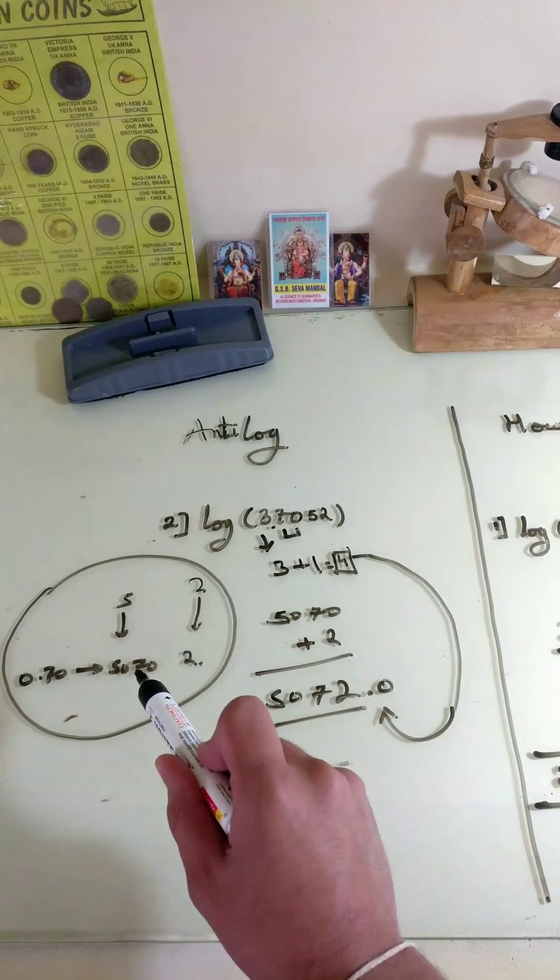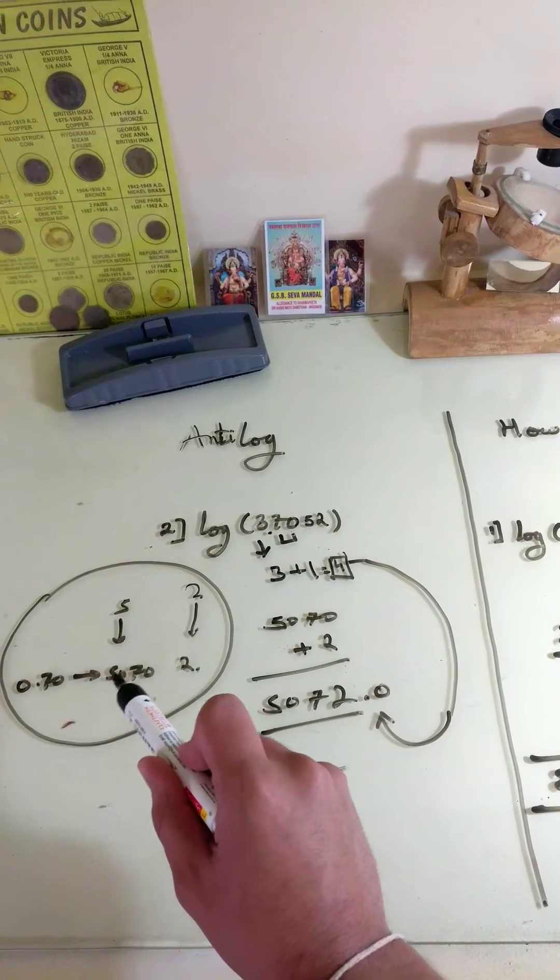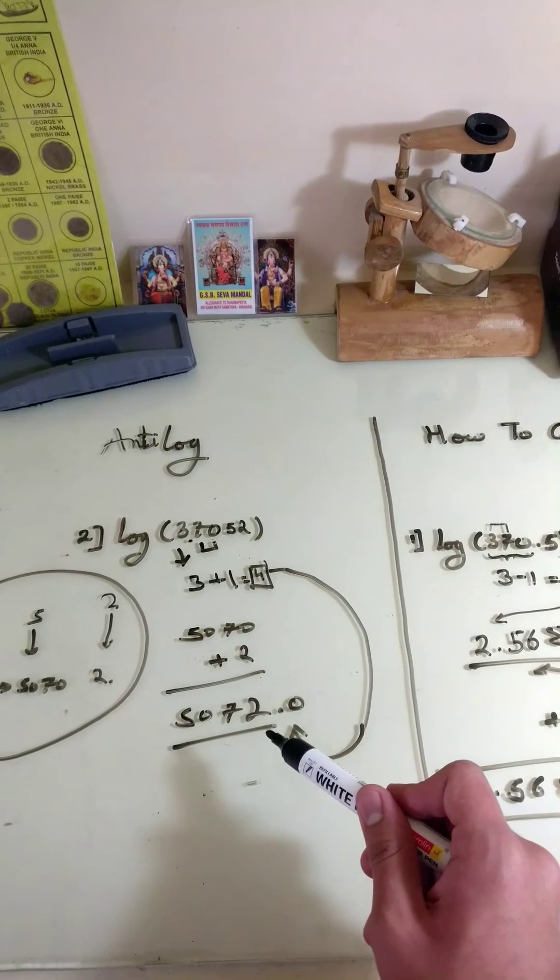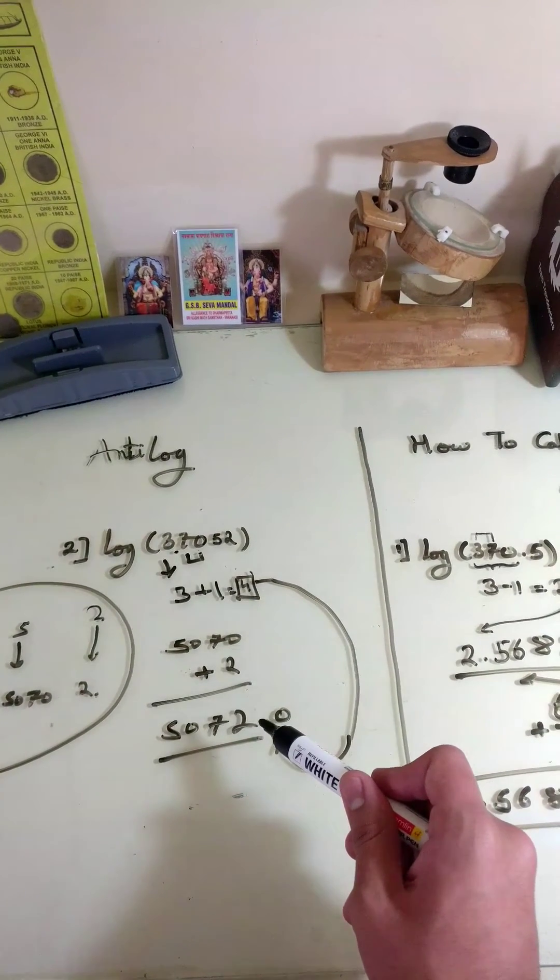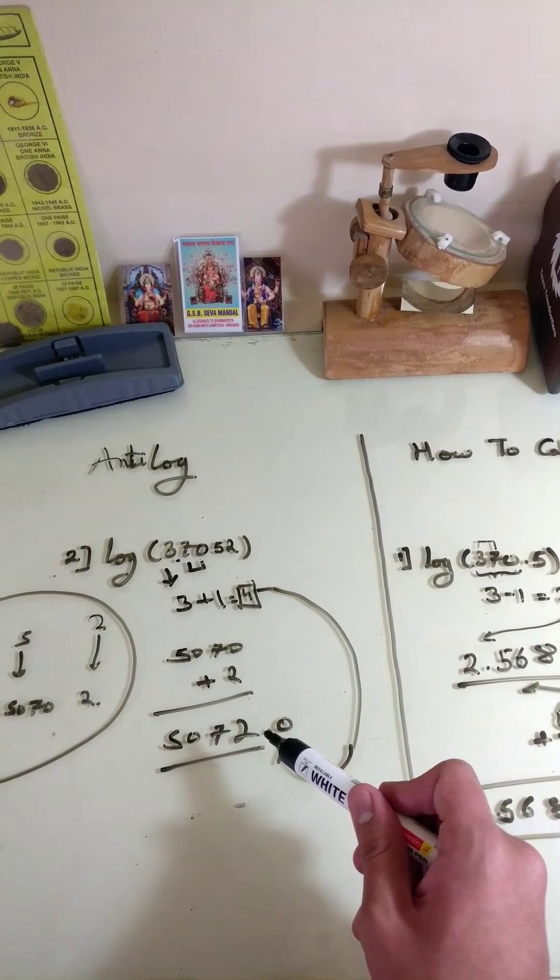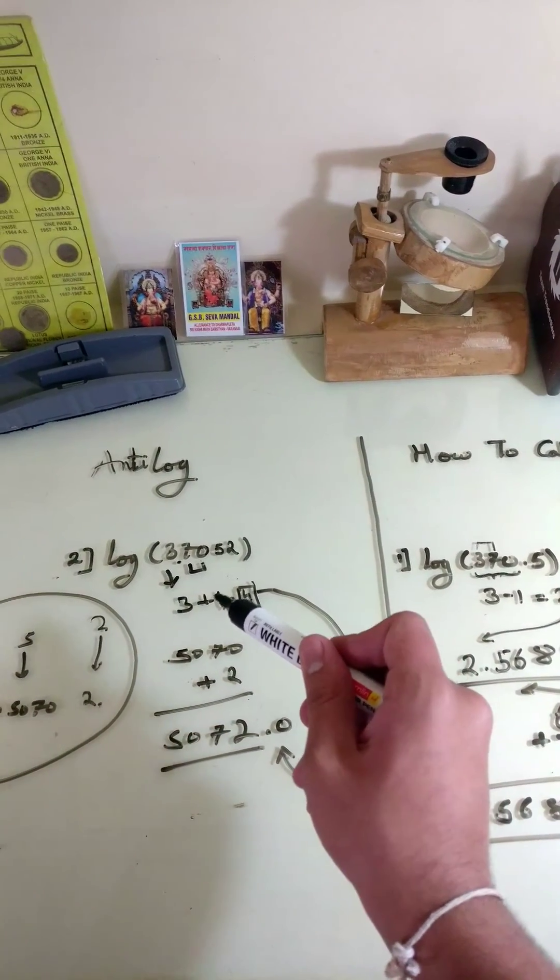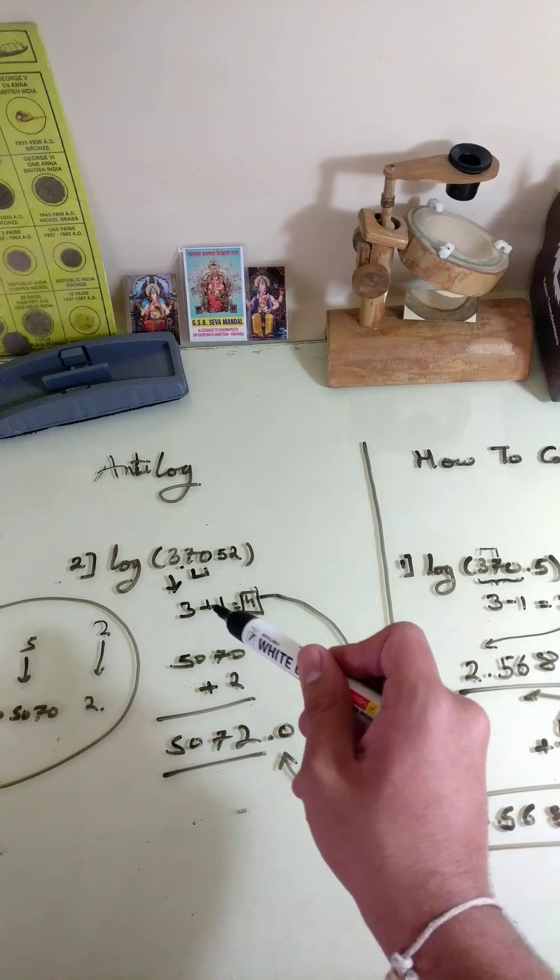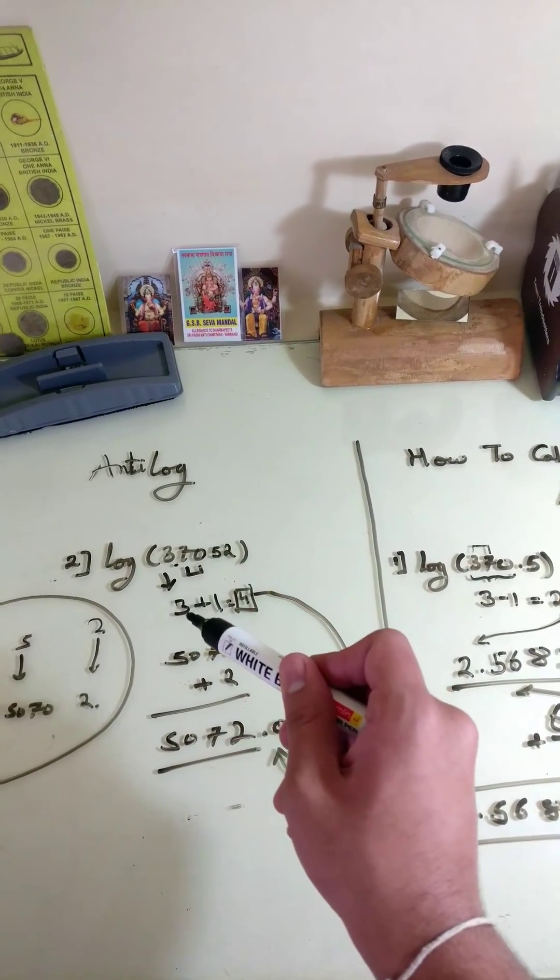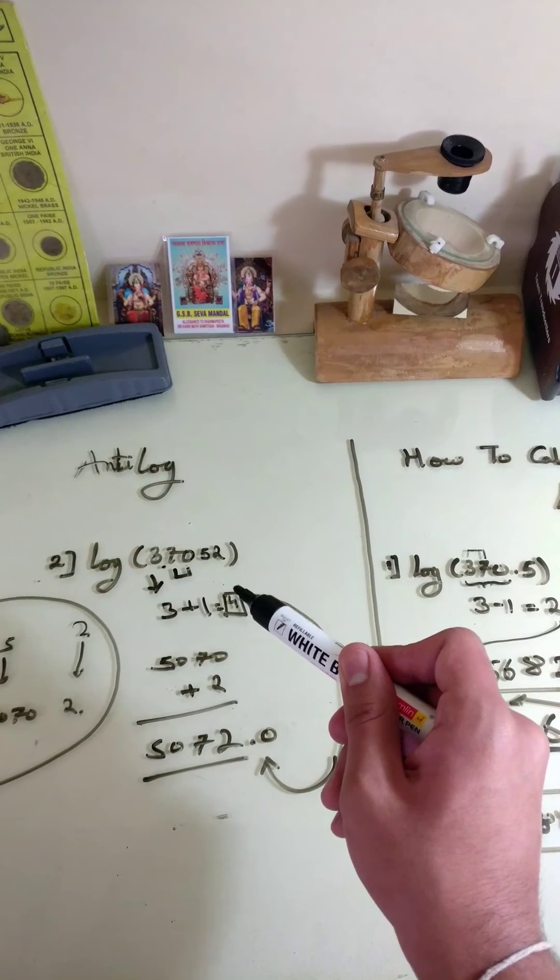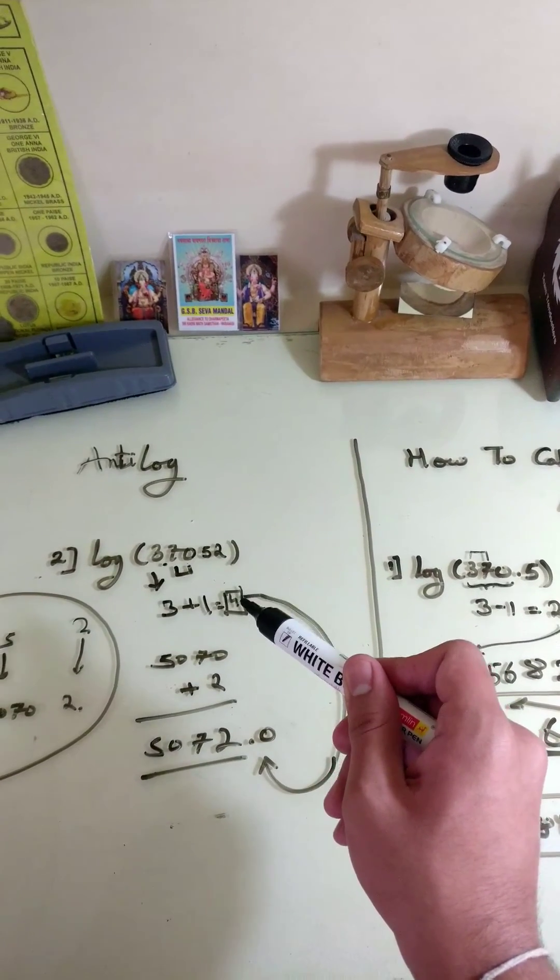So, we add 2 to 5070 which gives us 5072. Now, we put the decimal place according to the number which we got while we added 3 plus 1. 3 plus 1 gives 4. So, we add the decimal place after 4 digits.